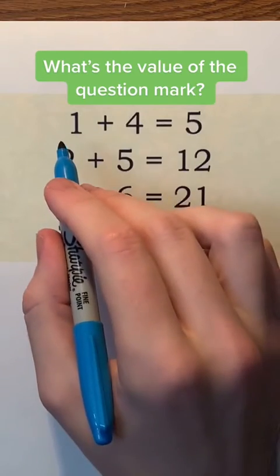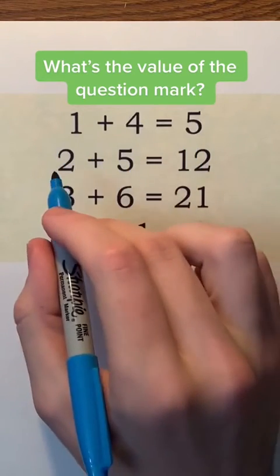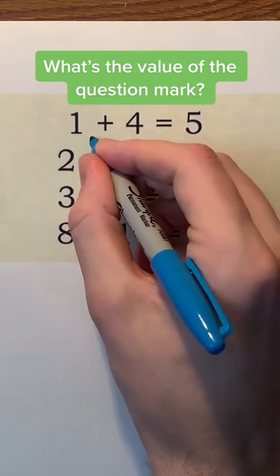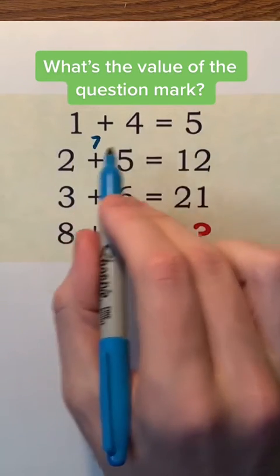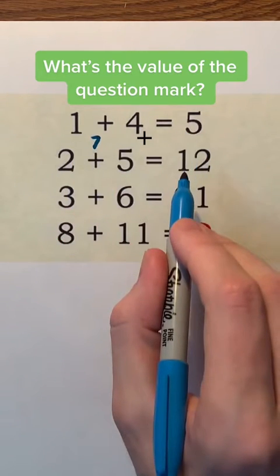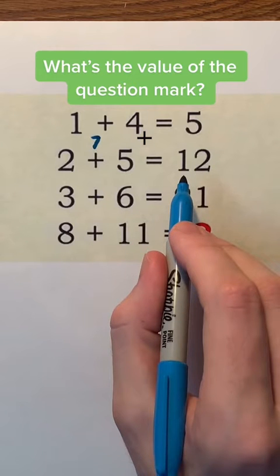In the first equation, notice that 1 plus 4 is 5. On the left side of the second equation, we have 2 plus 5 which is 7. 7 plus 5 is 12, which is what we have on the right side of the second equation.